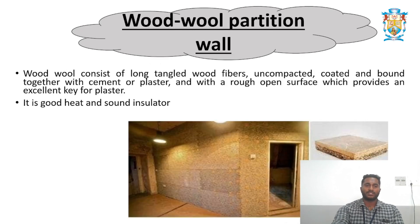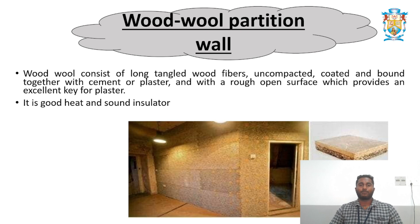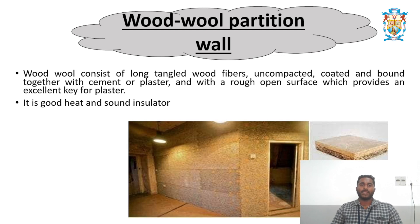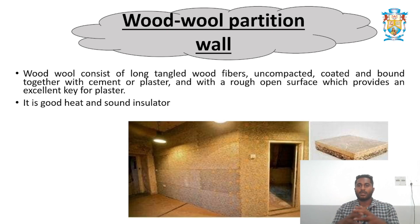Wood wool partition walls consist of long tangled wood fibers — uncompacted, coated, and bound together with cement or plaster — with a rough open surface that provides an excellent key for plaster. Wood wool is a byproduct of wood mixed with certain chemicals. It is a good heat and sound insulator and is suitable where sound insulation is required, such as in theaters where interior sound should not escape outside.